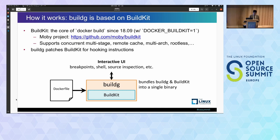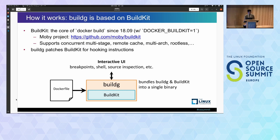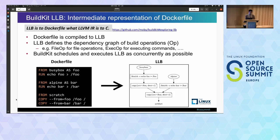How does BuildG work? BuildG is based on BuildKit, which is an image builder developed under the Moby project. If you use Docker build newer than 18.09 and enable the DOCKER_BUILDKIT=1 environment variable, you always use BuildKit. It supports features for efficient builds including concurrent multi-stage builds, remote cache, secret mounts, multi-arch, and rootless. BuildG embeds BuildKit, so you don't need to run BuildKit separately on the node. BuildG also adds some patches to BuildKit to allow hooking instructions.